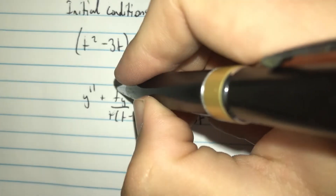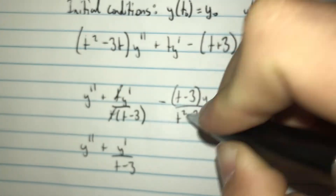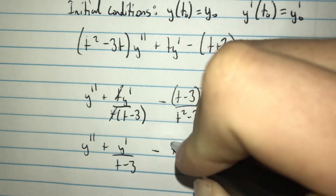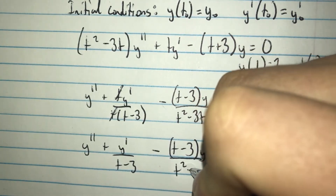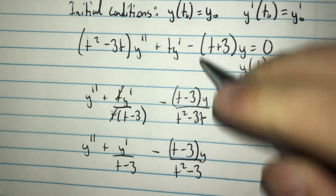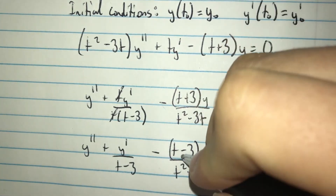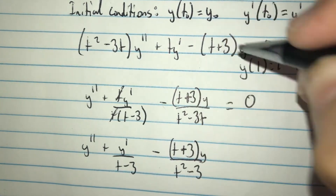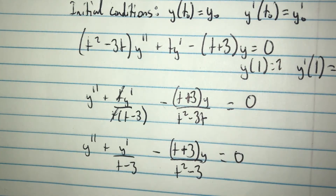Cleaning this up, the t's cancel in the y prime term, so we get y double prime plus y prime over t minus 3, plus the quantity t minus 3 times y over t squared minus 3t, equal to zero.